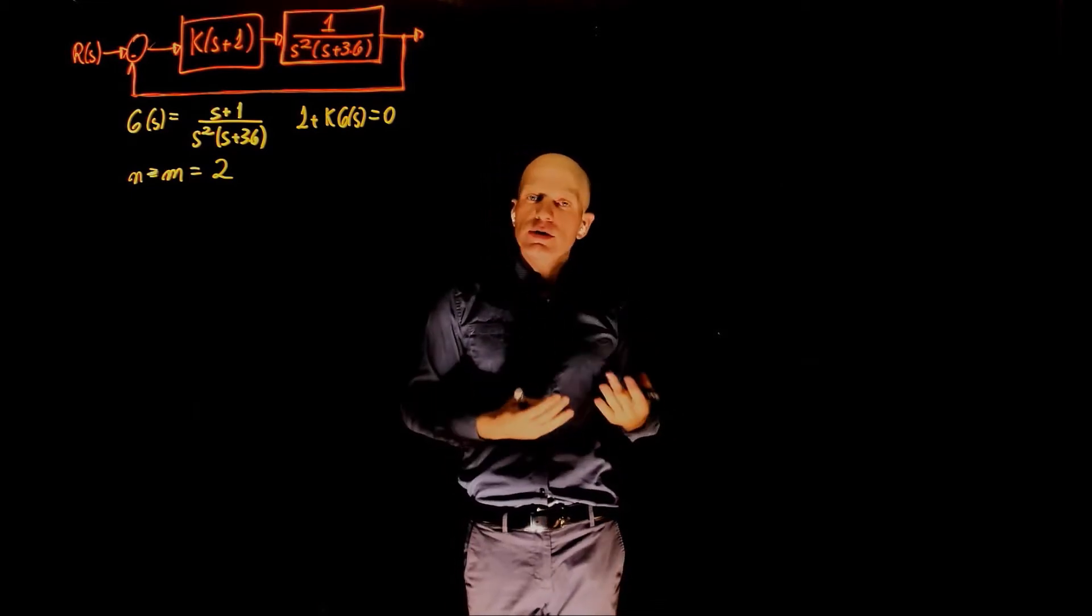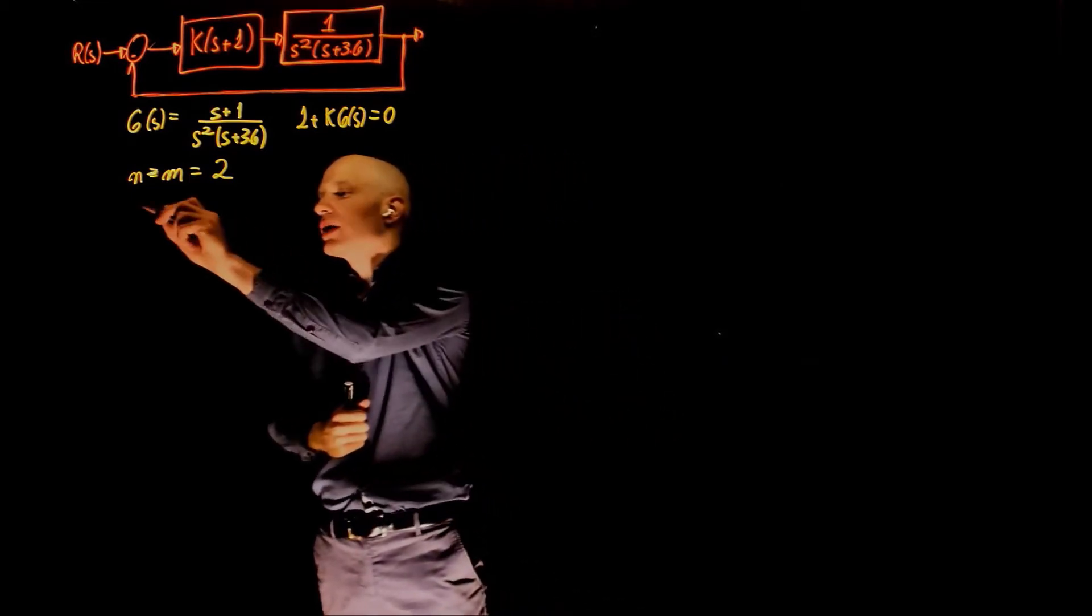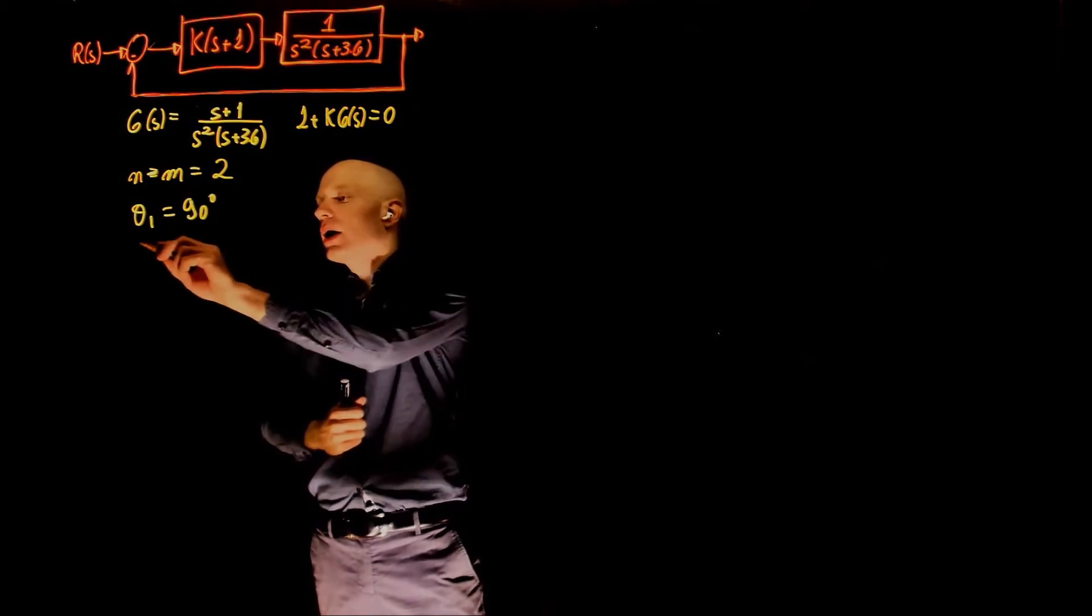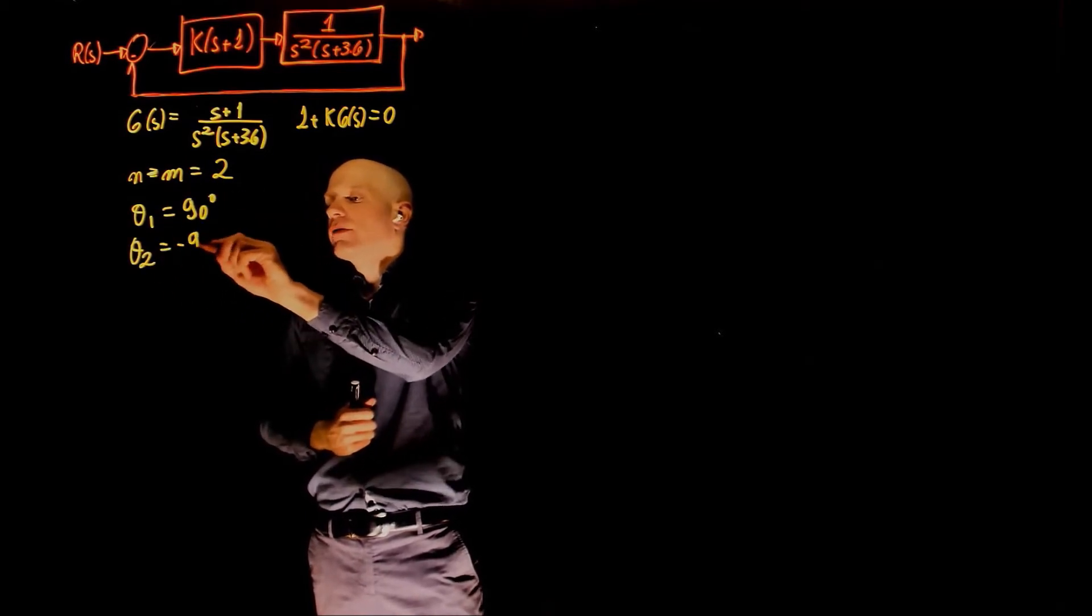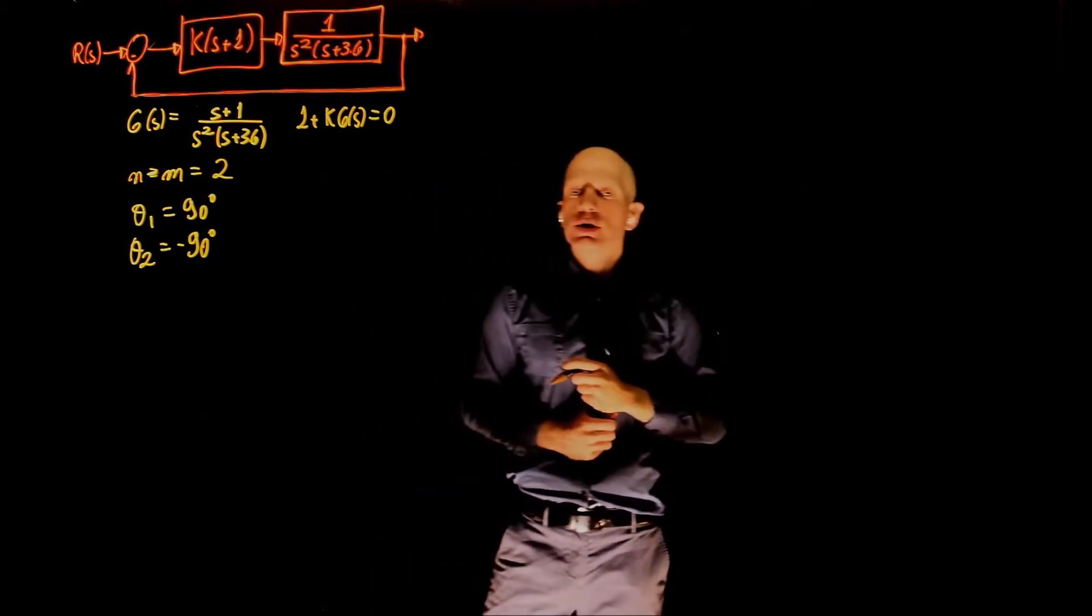When you have an excess of two poles, we now know that we have two asymptotes. The first one is 90 degrees, and the second one is negative 90 degrees. This is covered in lecture 11.